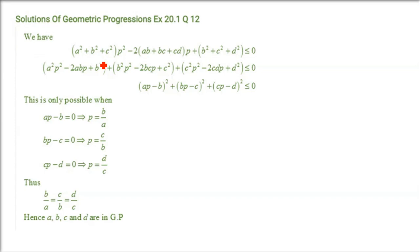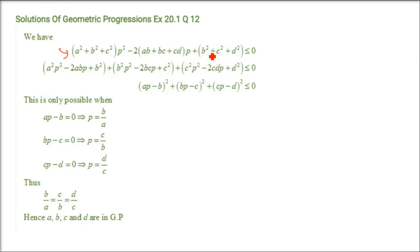Next: if A, B, C, D and P are different real numbers such that a given expression is less than or equal to 0, we have to show that A, B, C, D are in GP.